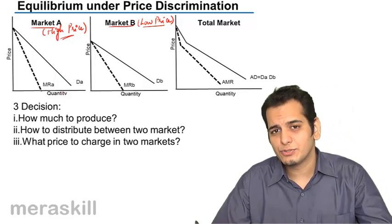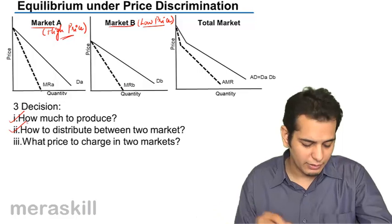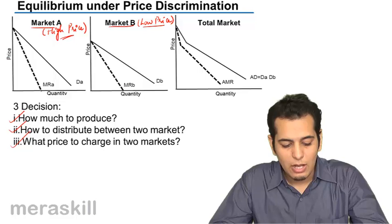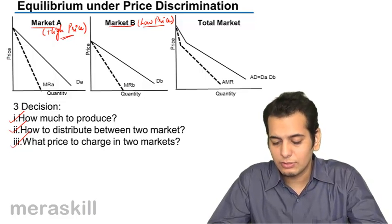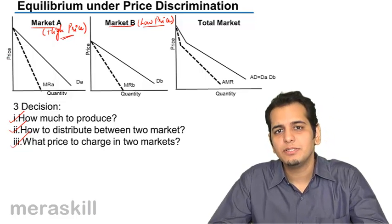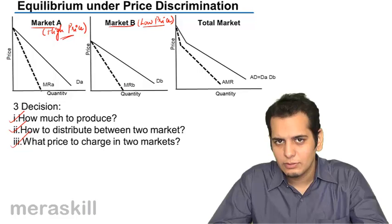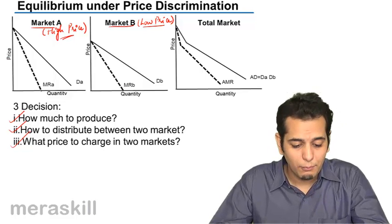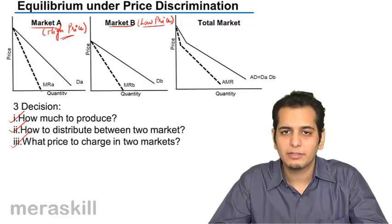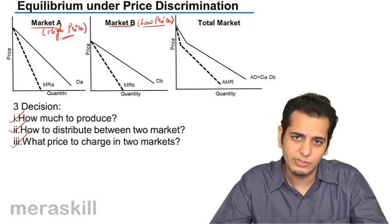The monopolist has three things to decide: how much to produce, how to distribute between the two markets, and what price to charge in the two markets. How much to produce is answered by the equation MC equals MR — where marginal cost equals marginal revenue, he will produce that much. The problem here is he has two different markets, and the marginal revenue from both markets is different.